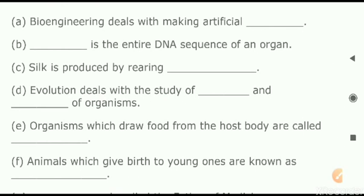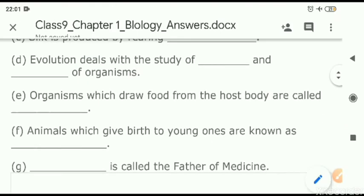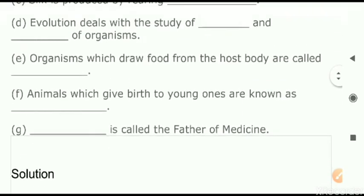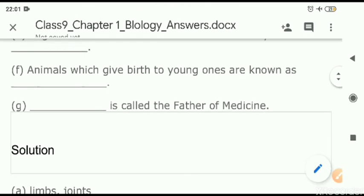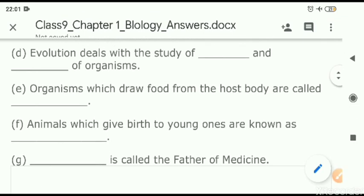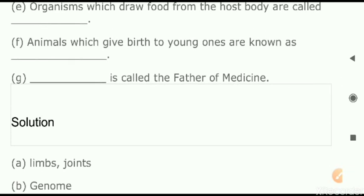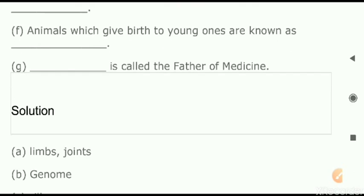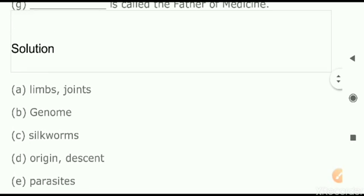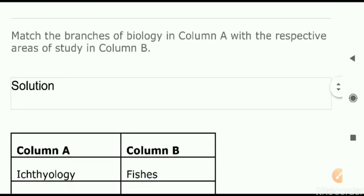Next, fill in the blanks. Bioengineering — what we can make with that: we can make artificial limbs and artificial body organs. The DNA sequence of an organism is called? That is genome. Next — silk is produced by rearing: that is silkworms. Next D part — evolution deals with the study of blank and blank of the organism: the answer is origin as well as descent — this is the definition itself. Next E part — organisms which draw food from the host body: those are called parasites. F — animals which give birth to young ones: they are called viviparous animals. In ancient India they were called zivarous animals. Next — blank is the father of medicine: the answer is Hippocrates.